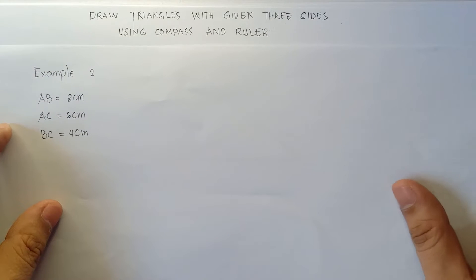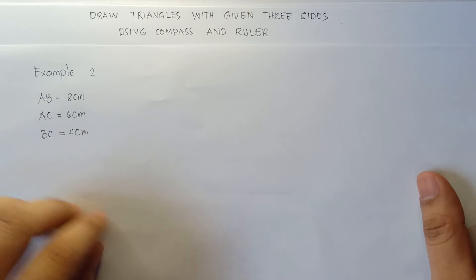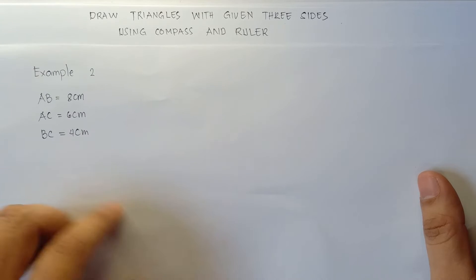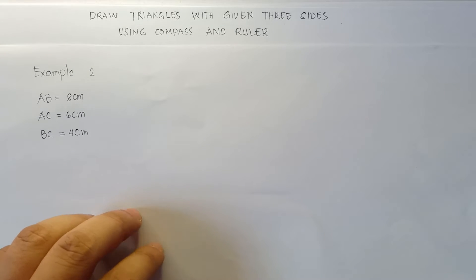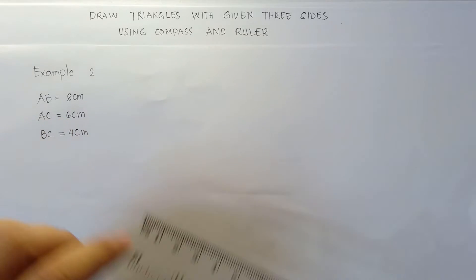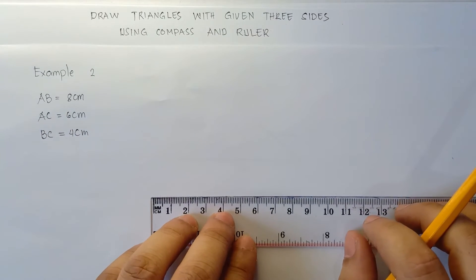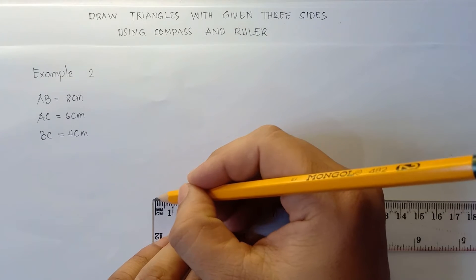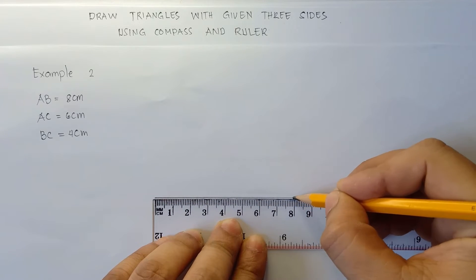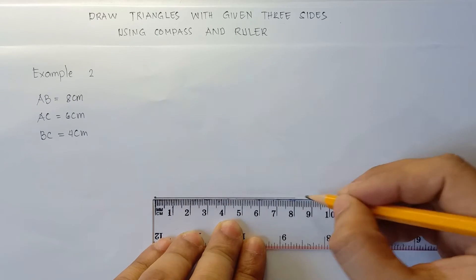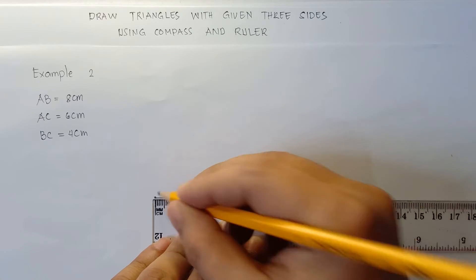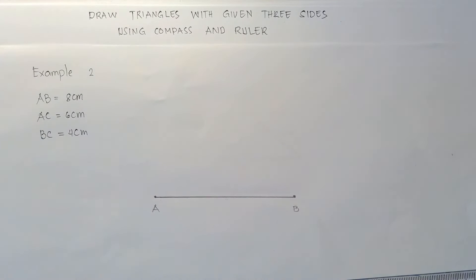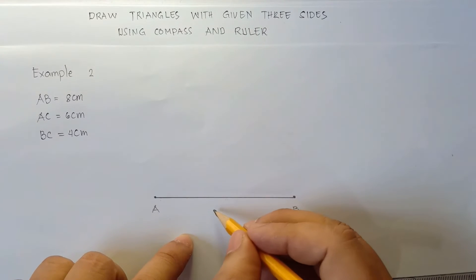So example number 2. We have given side AB: 8 centimeters, side AC: 6 centimeters, and side BC: 4 centimeters. First step, you draw a horizontal line for the longest side — that is 8 centimeters. So we have side AB — this is point A and then point B — and we label it 8 centimeters.